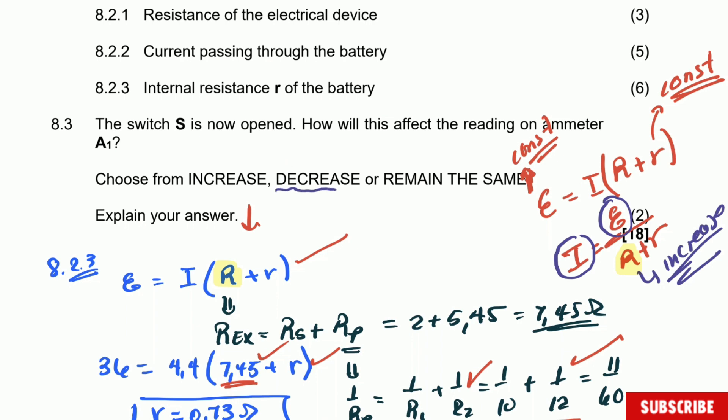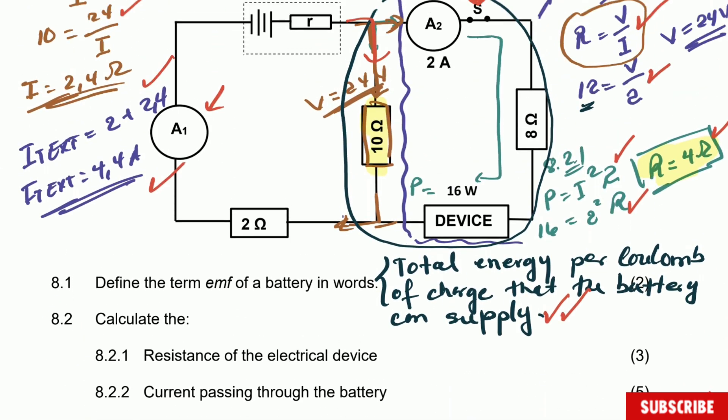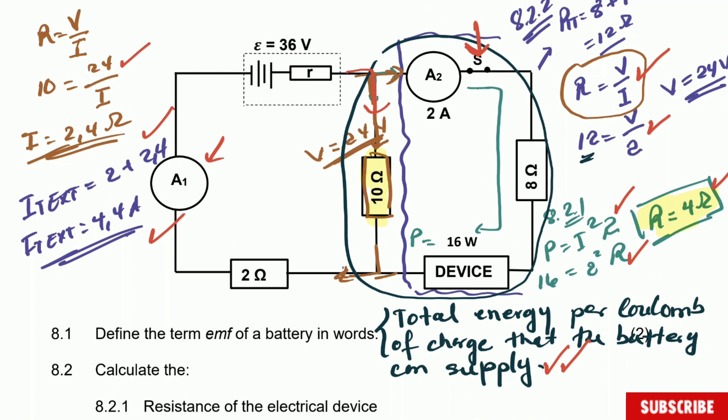One mark for saying decrease. The explanation: with EMF constant and internal resistance constant, the total external resistance increases when switch S opens, therefore the current decreases. It's a very good question with a lot of calculations, but it's not that bad.